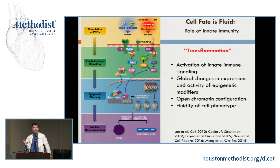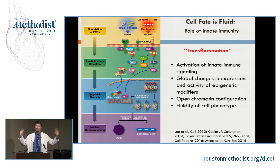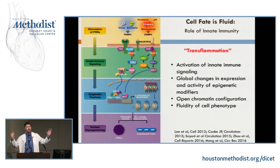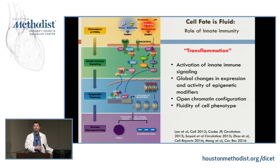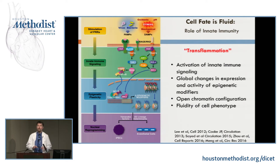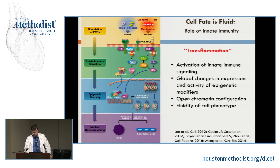We have receptors on our cells for those challenges — Toll-like receptors, receptor for advanced glycosylation end products. These receptors can sense damage or pathogens, triggering innate immune signaling that leads to the release of inflammatory cytokines. What we've shown additionally is that you get changes in epigenetic modifiers, opening up the DNA for greater accessibility. Now that we know that to be true, we can take advantage of it and change cells in a therapeutic manner.